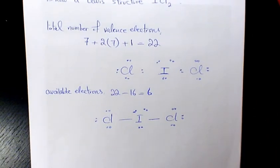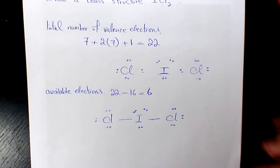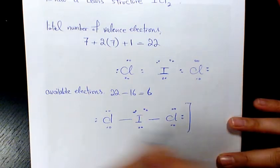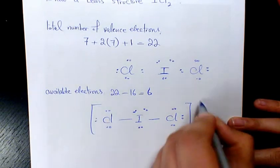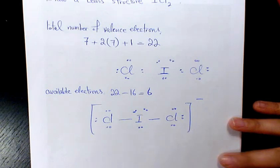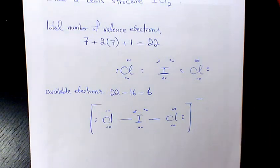So that's gonna be the Lewis structure for ICl₂⁻. We need to place the negative charge on here like that. I hope you enjoyed this video — please leave me a comment if you have any questions. Thank you for watching and have a great day!